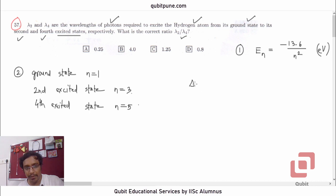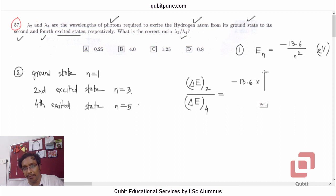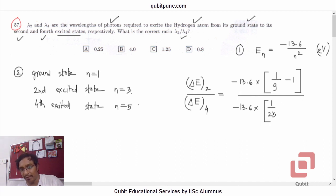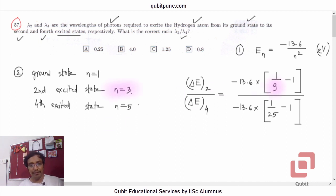Similarly, the fourth excited state refers to n equal to 5. So let us first determine the ratio delta E2 divided by delta E4. We need negative 13.6 into (1/3² minus 1) in the numerator — that is the energy needed for the electron to jump from the first to the third orbit. In the denominator, we have negative 13.6 into (1/25 minus 1), because it is the fifth orbit. The ground state gives n equal to 1, so n equal to 3 brings 3 squared and n equal to 5 brings 5 squared.